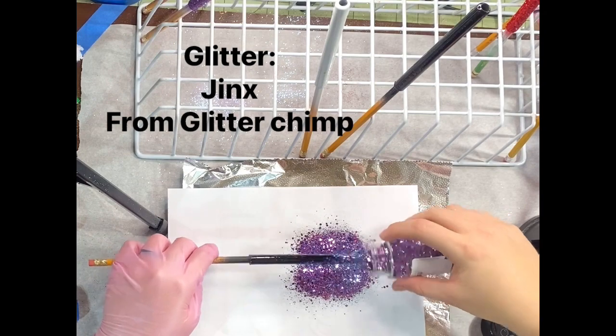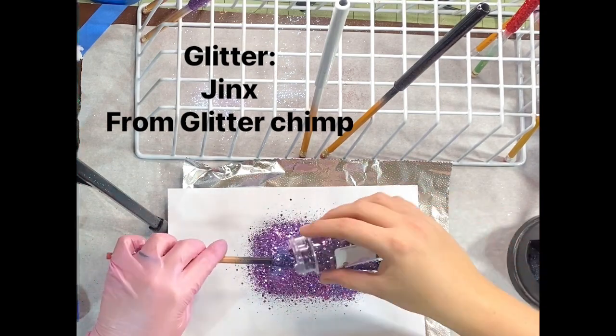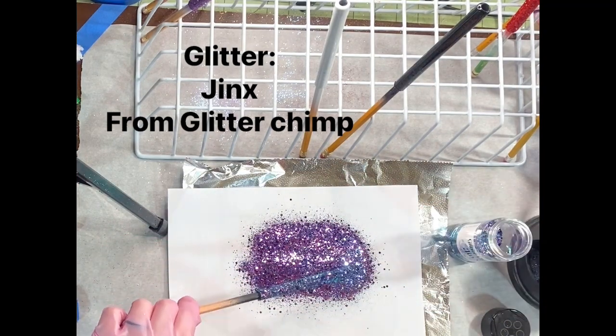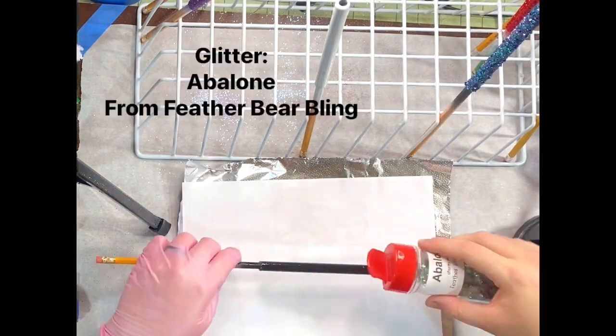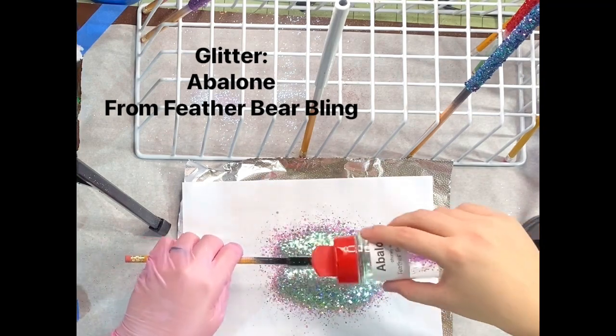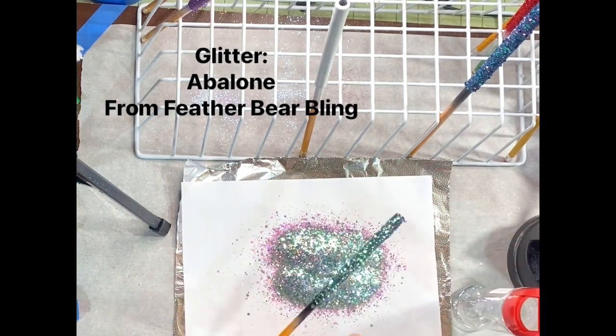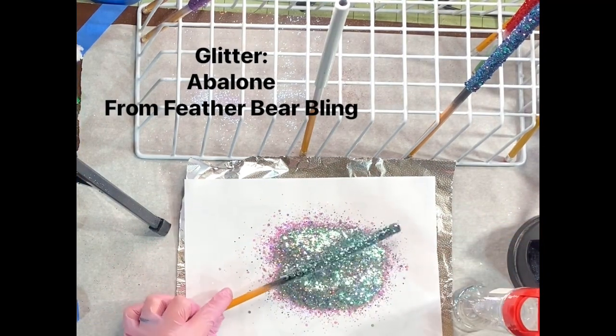I like doing a black base for my color shift glitters, but you can do a base color closer to your glitter. I probably should have done a teal paint with this, but it did turn out really pretty at the end. But it would have popped more with a lighter color underneath.